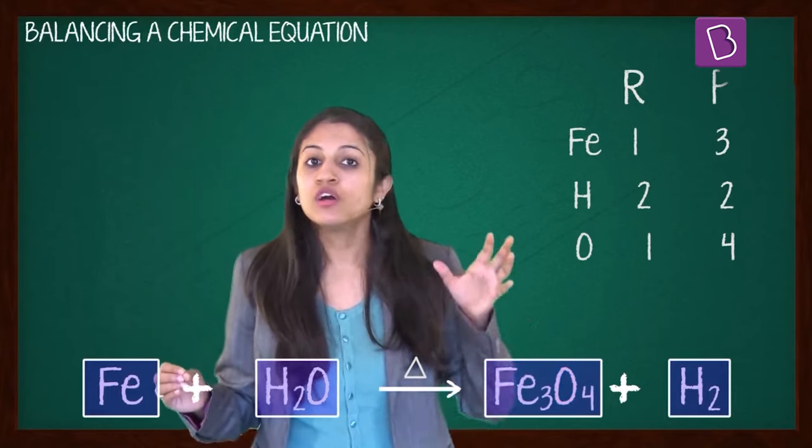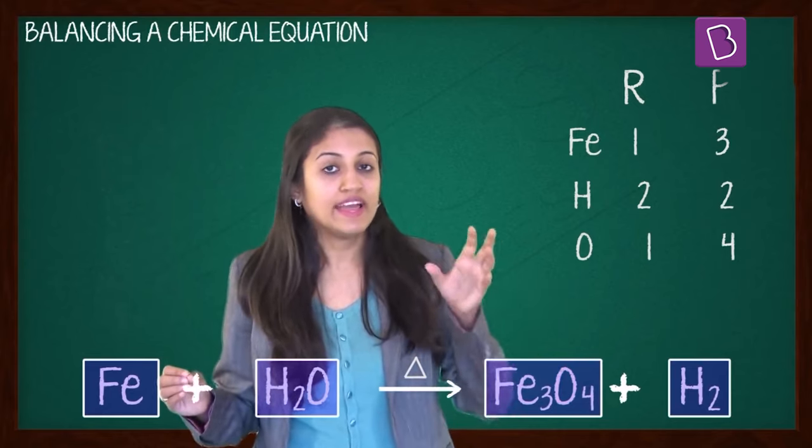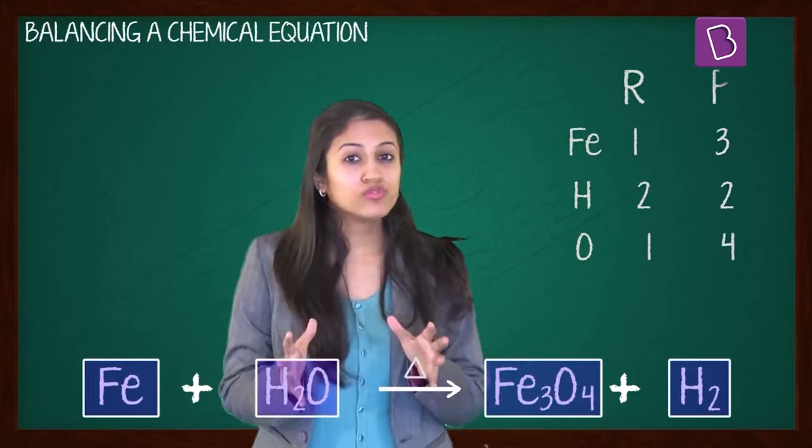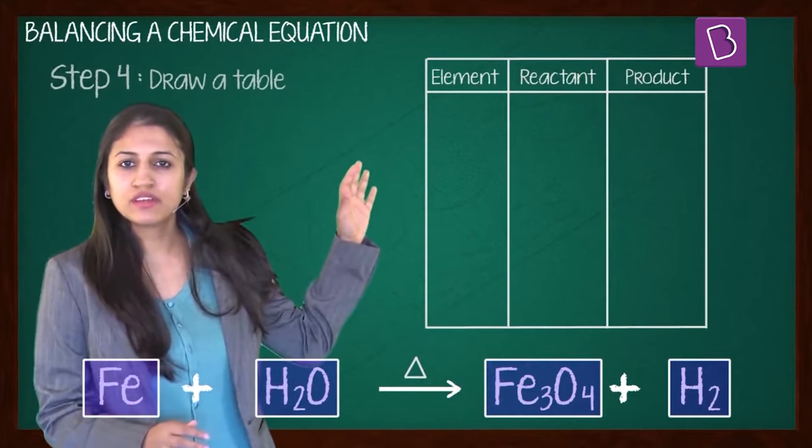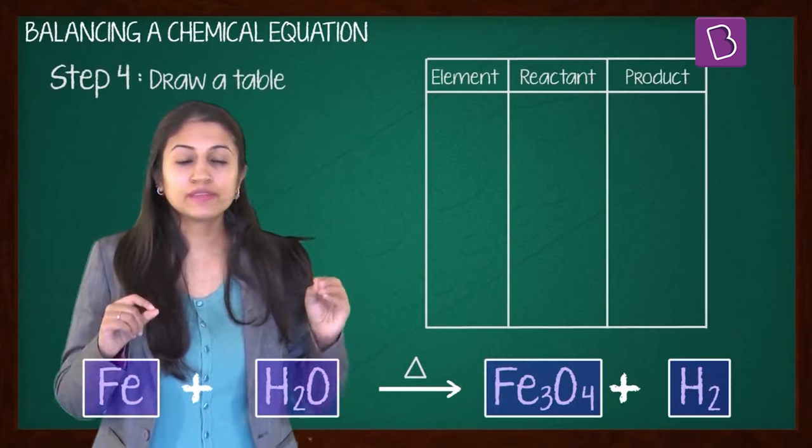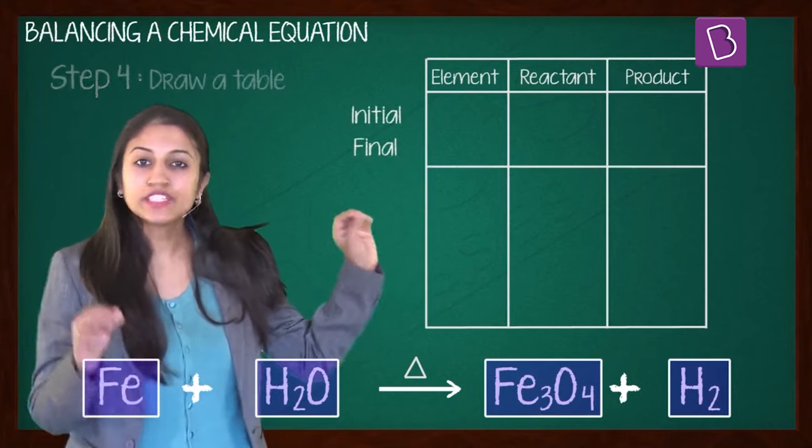Because you have more on the product side. So first, let's take this Fe3O4 and see how to balance the number of oxygen atoms in this. What we'll do is drop a little table like this, where we compare the number of atoms of oxygen in the reactants and the products. We'll have it in two steps, initial state and final state.